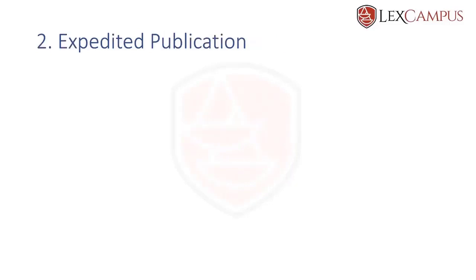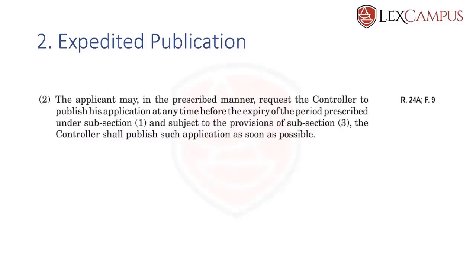The second thing to remember is that there is a process by which you can expedite the publication. The default rule is that the application is not published until 18 months are over, but if you are in a hurry, there is expedited publication. Section 11A(2) tells us that a person may request the controller to publish the application anytime before the expiry of the 18-month period, and the controller shall publish such application as soon as possible. The request is made using Form 9.